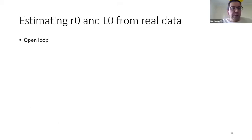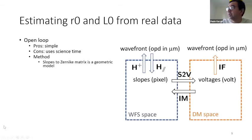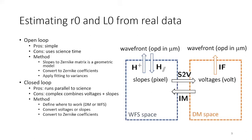And so if you want to estimate from real data, you can use open loop. The pros of open loop is that it is simple. The cons is that you're going to use science time to do that. And it's very easy. You just, from your slopes, you generate your variances, and then you estimate the turbulence parameters. If you are in closed loop, then you are in a more tricky business, because you have to combine the deformable mirror data with the wavefront sensor data. And there are lots of difficulties related to calibration that you're going to encounter when you want coverage from voltages to slopes and do an absolute measurement, because we are doing an absolute measurement of some variances.